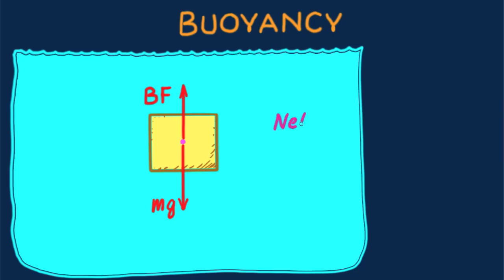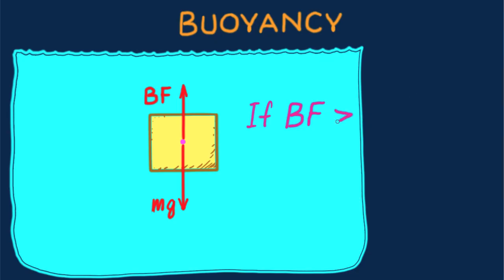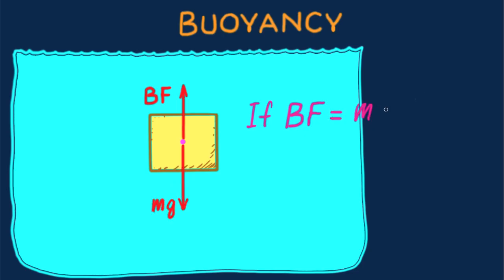The center of mass is in the center. The overall net force on the block is BF minus Mg, where BF acts upward and Mg downward. If BF is smaller in magnitude than Mg — that is, weight is greater than buoyant force — the block sinks. If BF is larger in magnitude than Mg, the block will rise and float on the surface. In the case where BF equals Mg, the block would neither sink nor float.